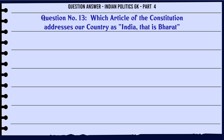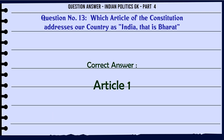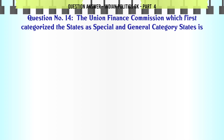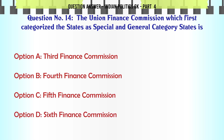Which article of the Constitution addresses our country as 'India, that is Bharat'? A. Preamble. B. Article 1. C. Article 2. D. Article 3. The correct answer is Article 1.